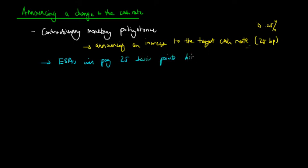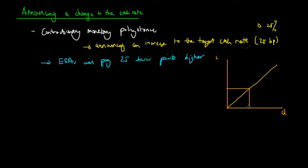Due to the law of supply of money, when the price or cost of credit increases — so the interest rate — when the price paid to deposit money in the ESA account has actually increased, the interest rate has increased from I1 to I2. As a result, unsurprisingly, the quantity deposited in these ESA accounts by banks has actually increased from Q1 to Q2.